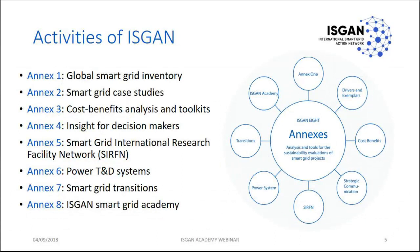Regarding the activities of ISGN, we have eight annexes, each responsible for a specific topic. Annex 1 covers the global SmartGrid inventory; Annex 2 covers case studies related to SmartGrid; Annex 3 — which I chair — is about cost-benefit analysis and toolkits for decision-making; Annex 4 is for decision makers and SmartGrid networks; Annex 5 is about facilities and laboratories; Annex 6 covers power transmission and distribution systems; Annex 7 is SmartGrid Transitions; and Annex 8 is the ISGN SmartGrid Academy, which is the organizer of this webinar.